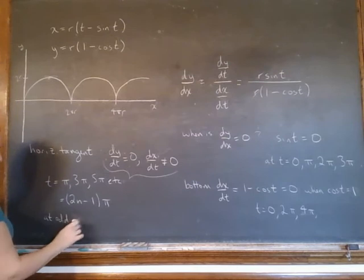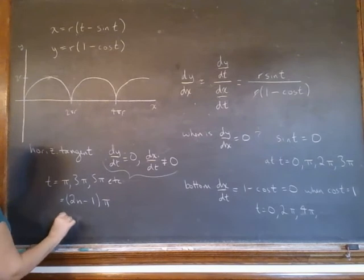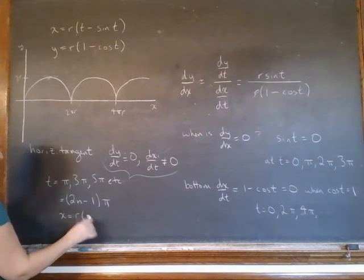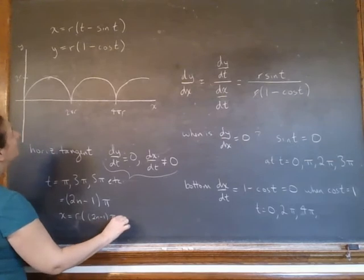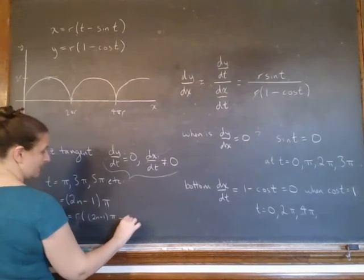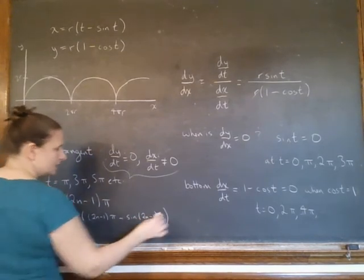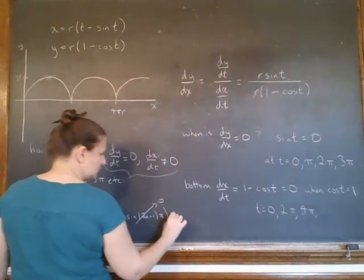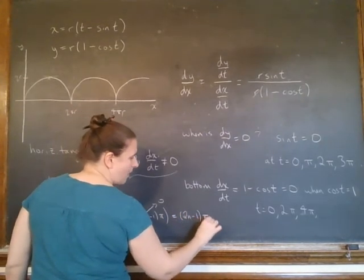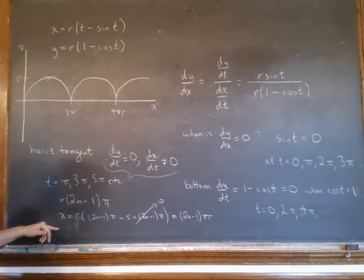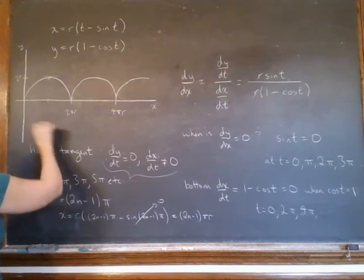At those values, so let's put it in. So x equals r times 2n minus 1 pi minus sine of 2n minus 1 pi. So this is just 0, so this is just going to be 2n minus 1 pi r. So my x value is going to be pi r, 3 pi r, 5 pi r, and that's actually what we kind of expected.